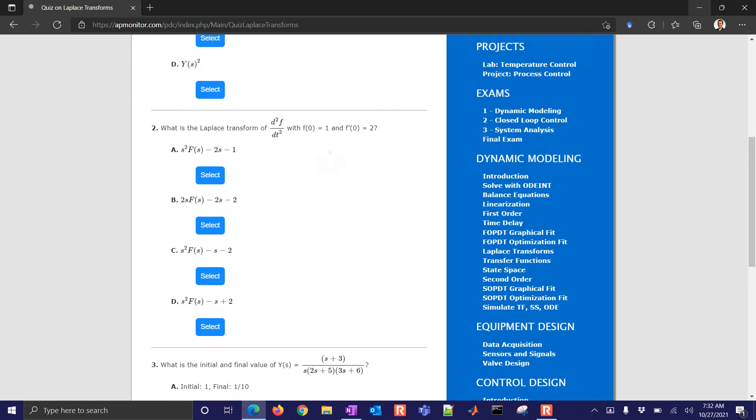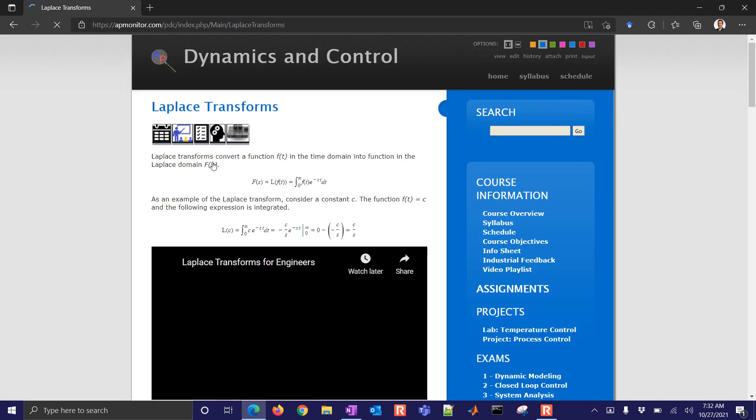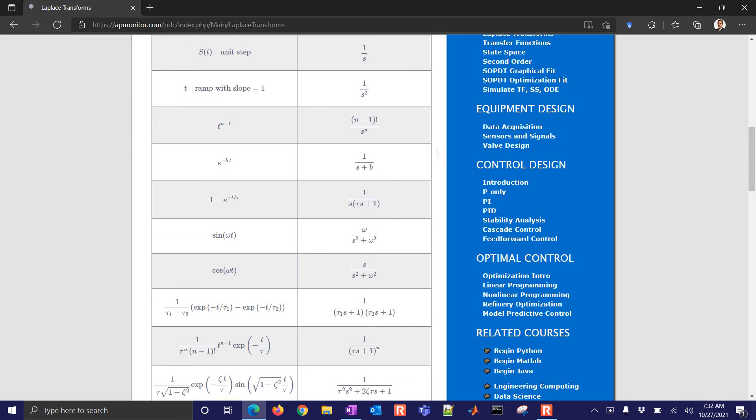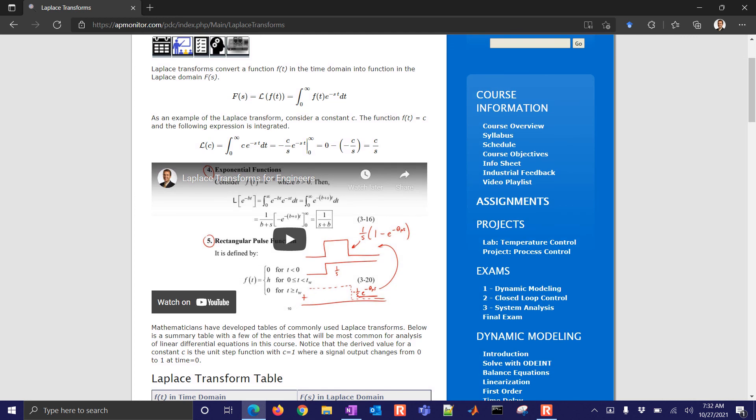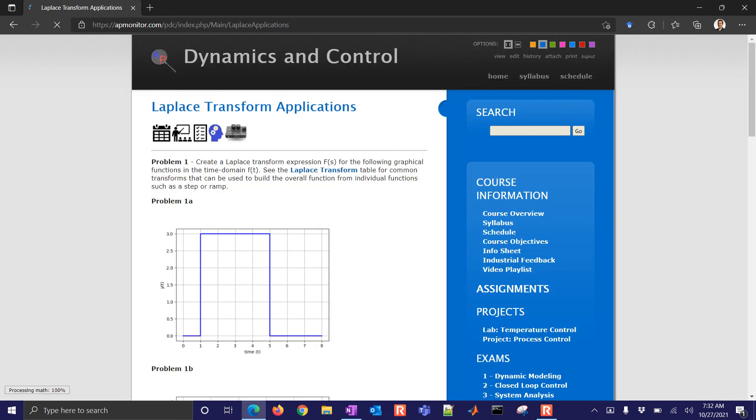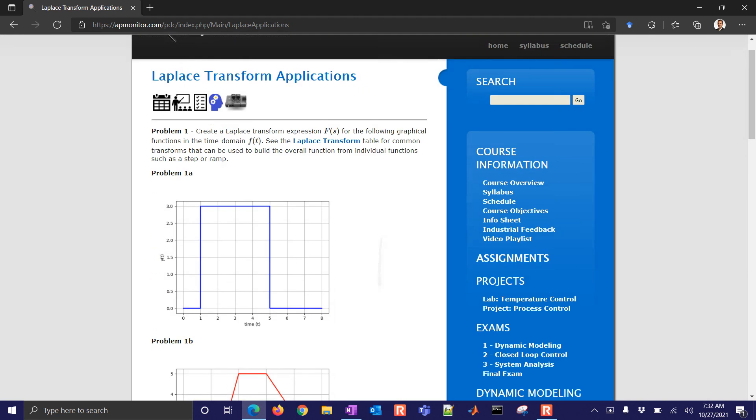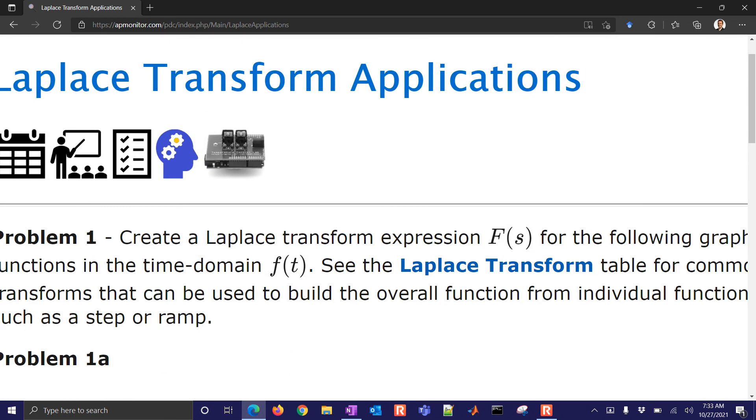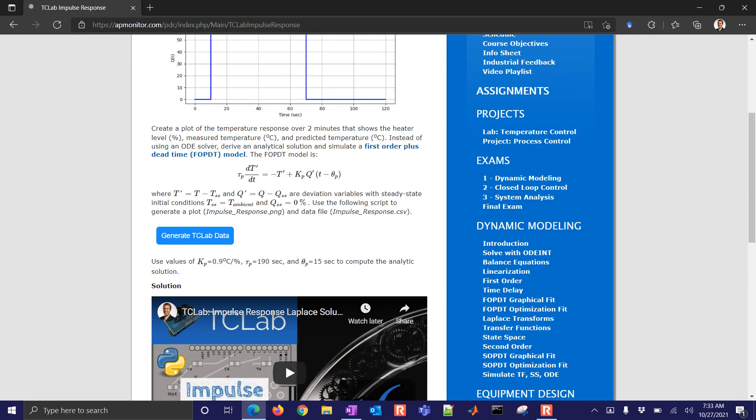If you want to get back to the learning material as well, it's just this navigation at the top. This is the quiz. Here's the learning exercises here, and it shows you the Laplace tables. And then if we also go over here, there's the simulation assignment. We're going to do next the Laplace transform applications. And then as a final one, we're going to go to the TC lab assignment, and we're going to compare the analytic solution of the FOPDT model with an impulse response of the TC lab. And we'll put those on the same plot and compare them.